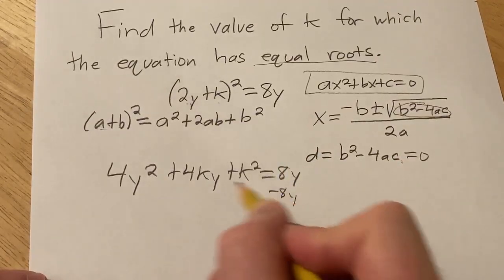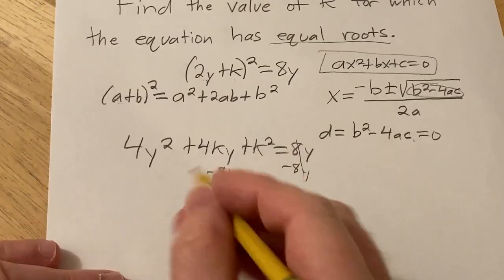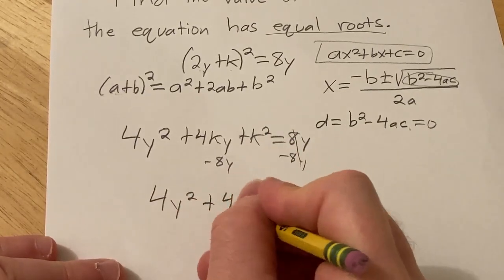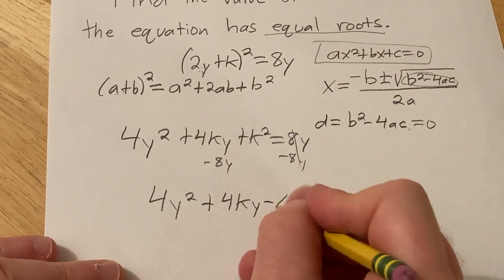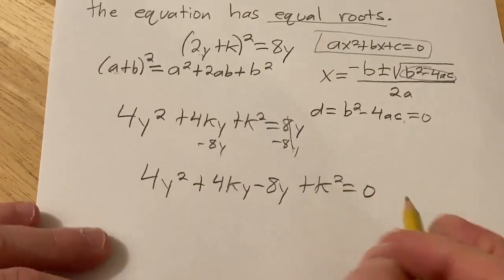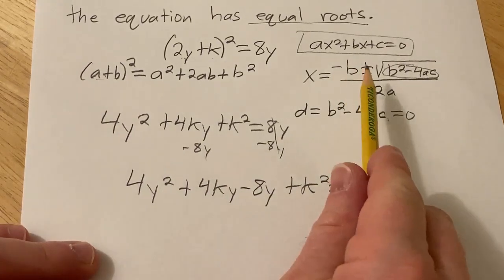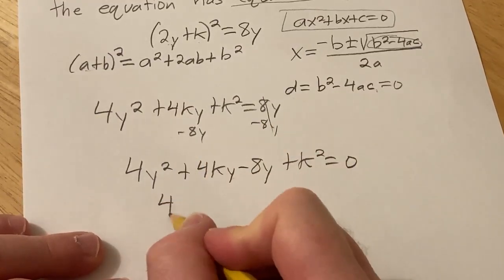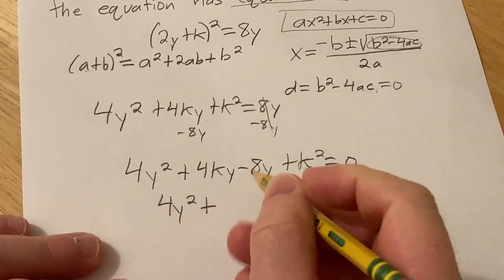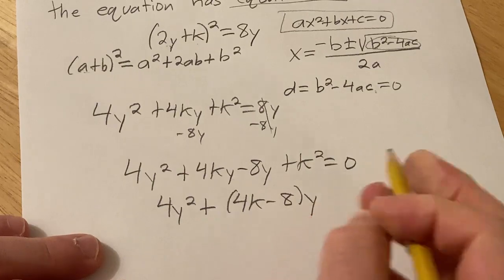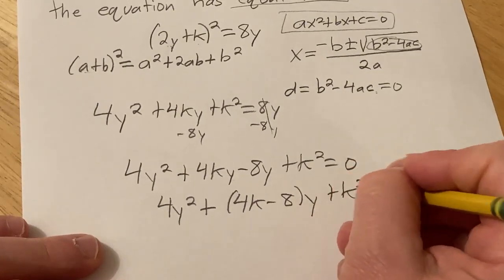Now we'll subtract 8y from both sides, so we get 4y² + 4ky - 8y + k² = 0. So now we have to put this in this form that you see up here, and it's not quite there yet. We have to factor out a y here, so this is 4y² + (4k - 8)y + k² = 0.